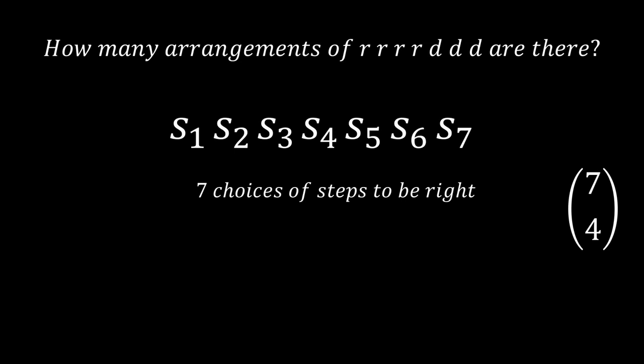Let's first consider choosing 1 step to be right. And now we will have 6 choices for the other steps because 1 is already chosen. And now we have 5 choices left for the third right step. And 4 choices left for the fourth right step.